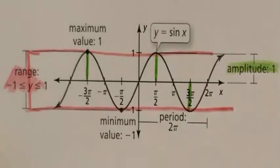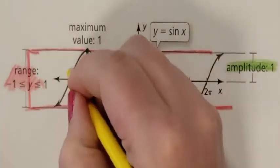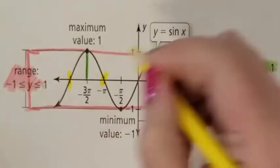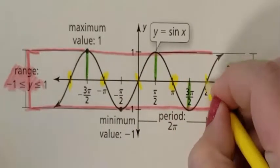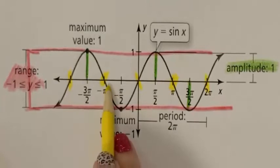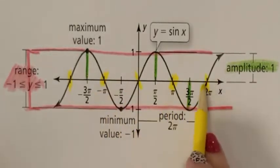I also want you to observe your x values. We have an x-intercept here, x-intercept here, x-intercept, x-intercept, x-intercept. Remember, our x-intercepts are at the whole pi values.